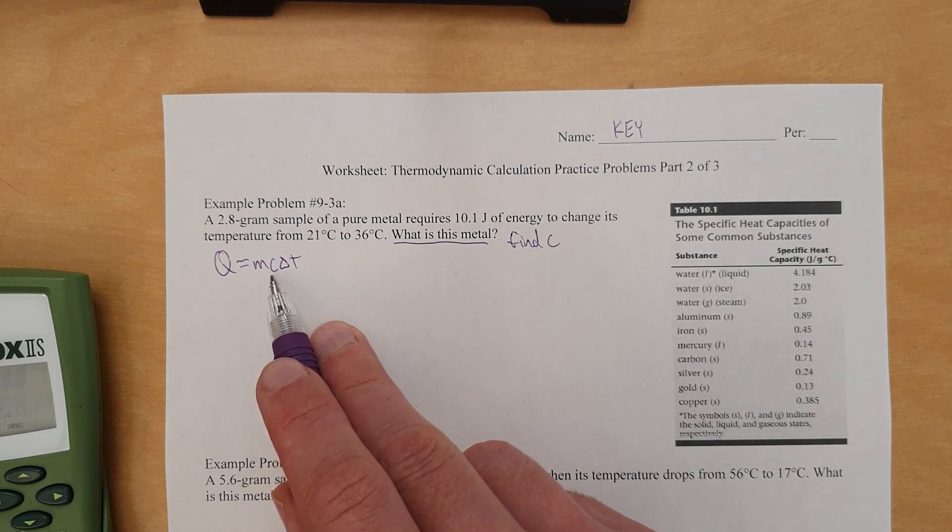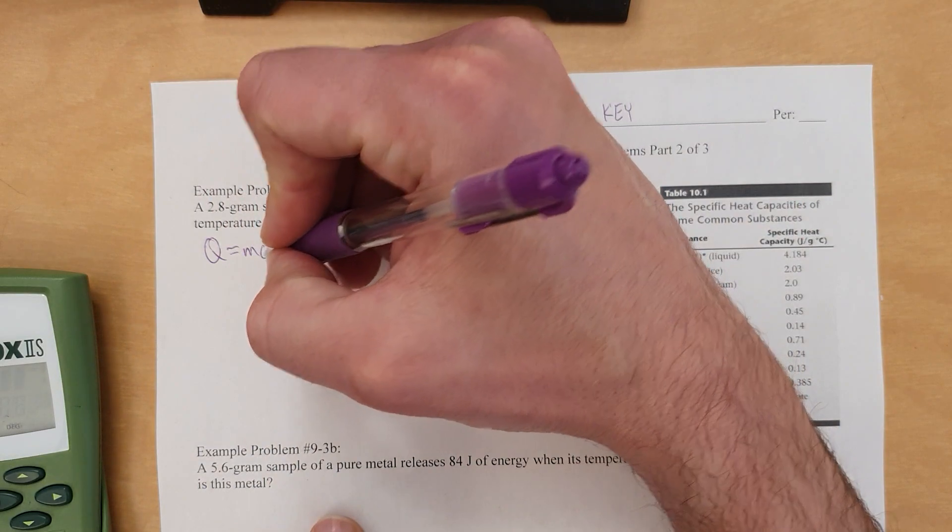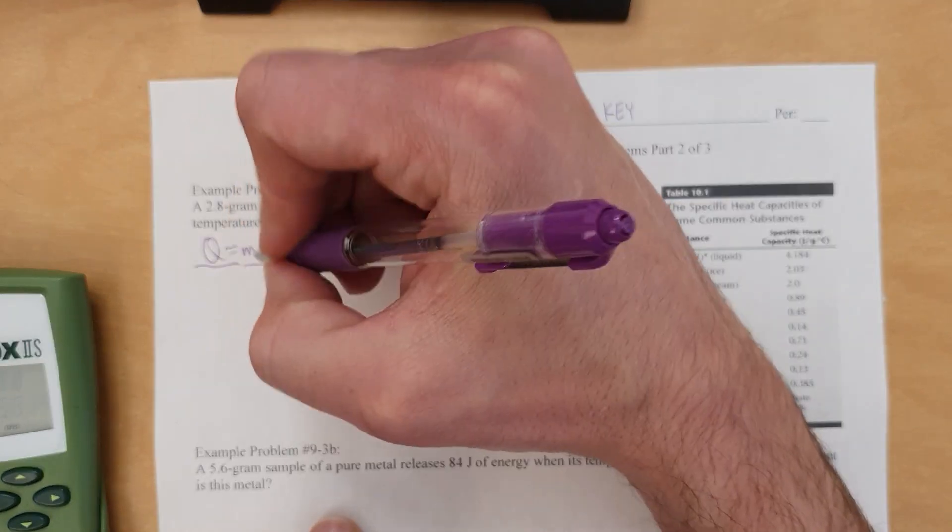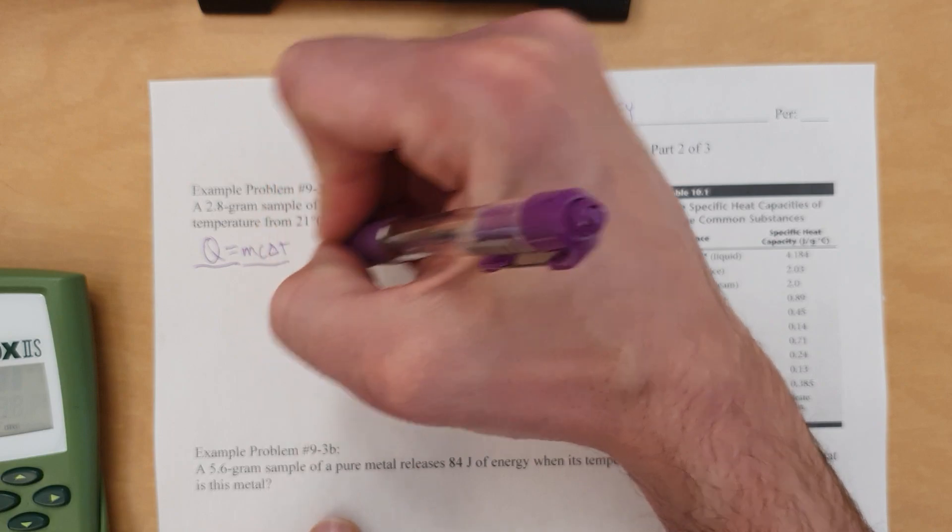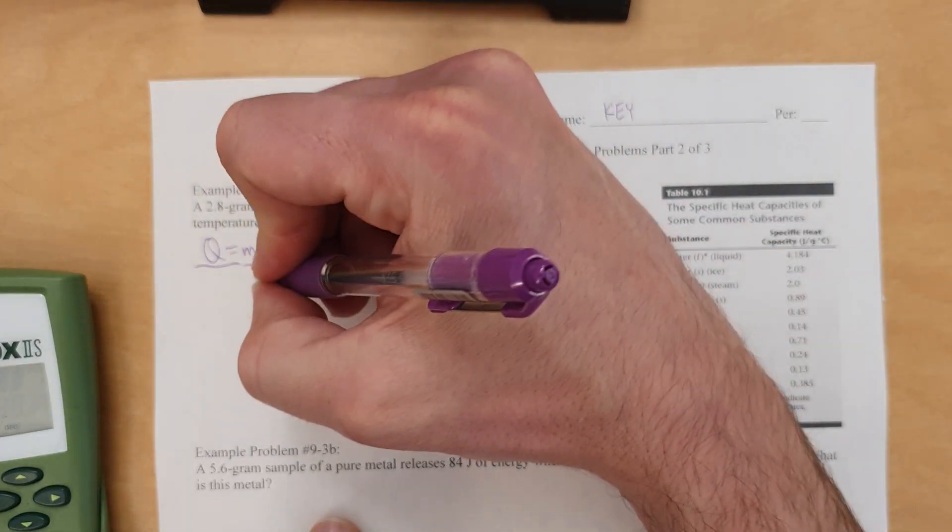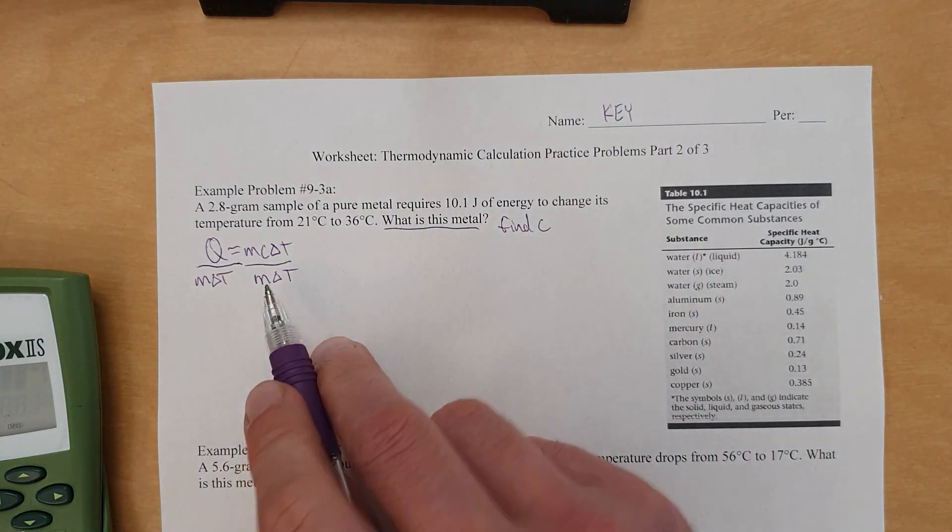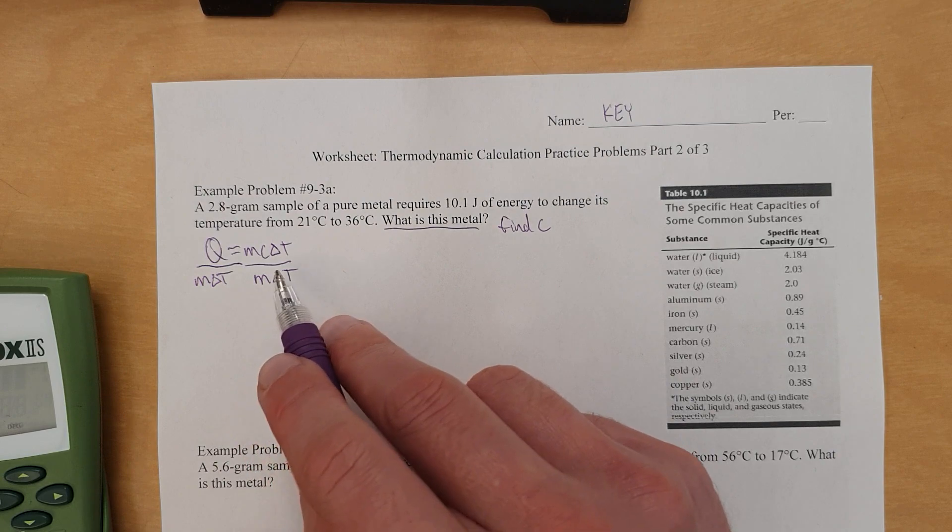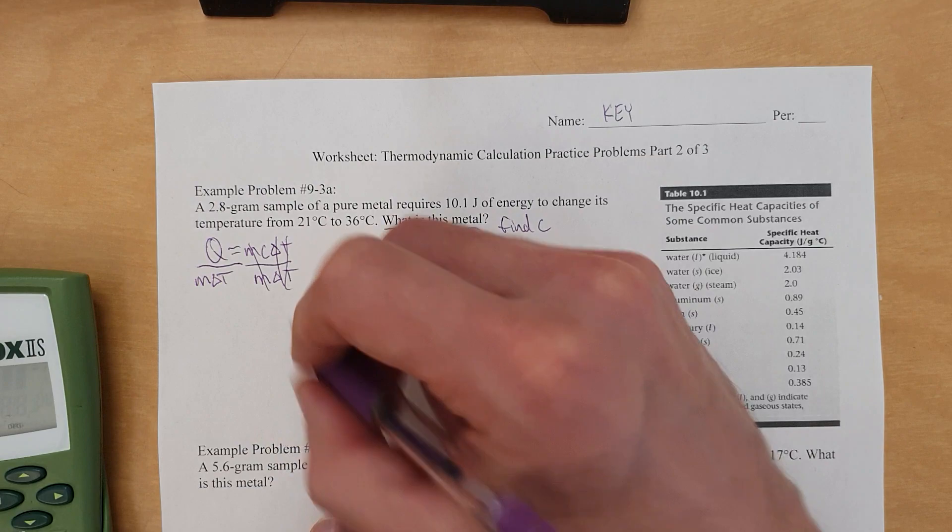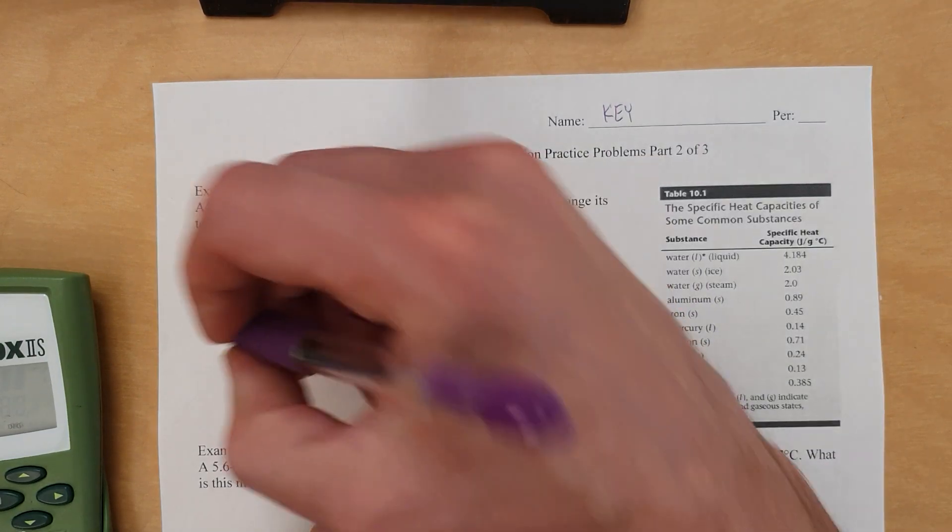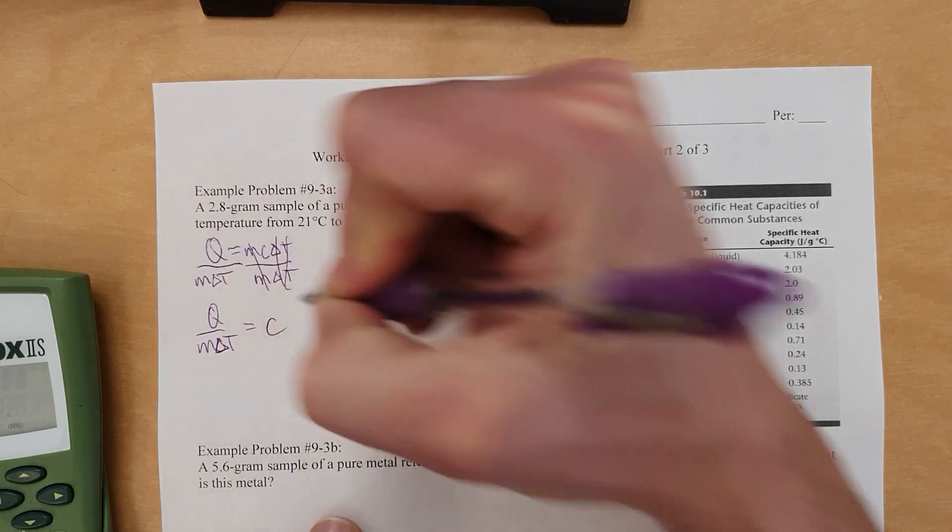So that means we need to get C by itself. We need to rearrange this equation algebraically. The way we're going to do that is we've got to do something to both sides, and since C is times all this stuff and we want to get it all out of there, we're going to divide by the stuff that is with C. So divide by m delta T, and remember to do it to both sides. In algebra, the way it works, if you want to divide something away, you've got to do it to both sides of the equation. So m cancels m, delta T cancels delta T, leaving just C by itself.